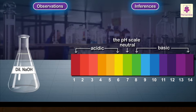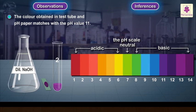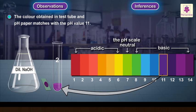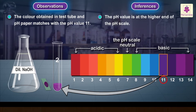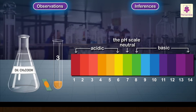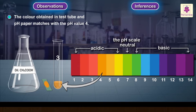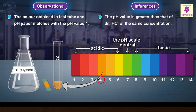Dilute sodium hydroxide solution: the color obtained in test tube and pH paper matches with the pH value 11. The pH value is at the higher end of the pH scale. Dilute ethanoic acid solution: the color obtained in test tube and pH paper matches with the pH value 4. The pH value is greater than that of dilute hydrochloric acid of the same concentration.